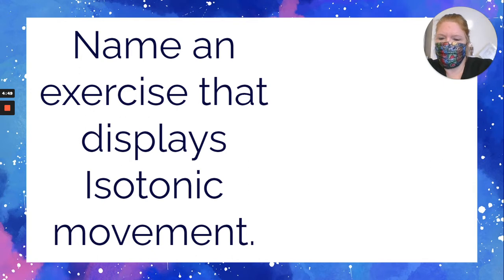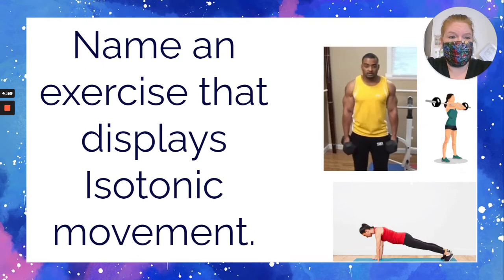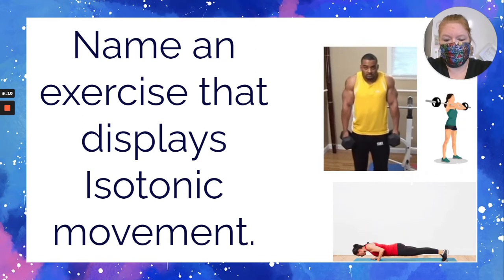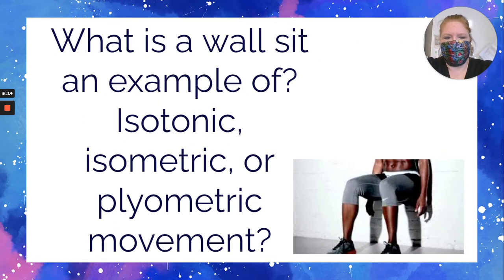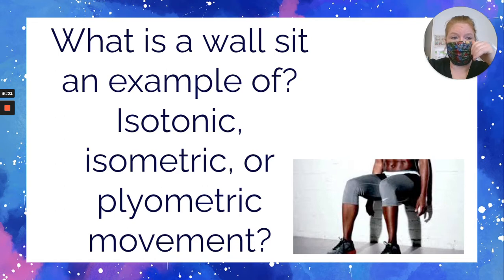Name an exercise that displays isotonic movement — there are a lot of examples. Constant weight, but the muscles are lengthening and shortening. It wouldn't be a clapping push-up, but a regular push-up or a bench press — anything where you're lifting weights is going to be isotonic. What do you think a wall sit is an example of? Is it isotonic, isometric, or plyometric? Well, is it big giant movements? No, so get rid of plyometric. Is there movement? No, so it could not be isotonic. It would have to be isometric.